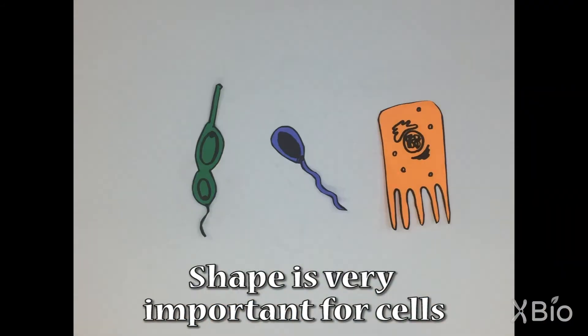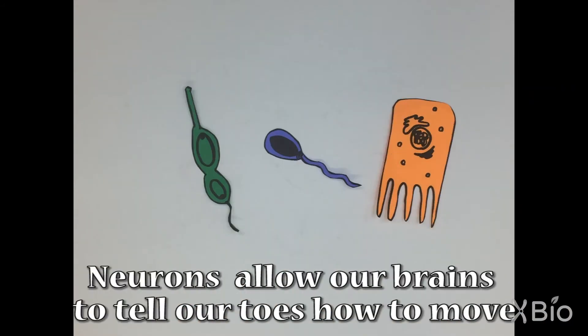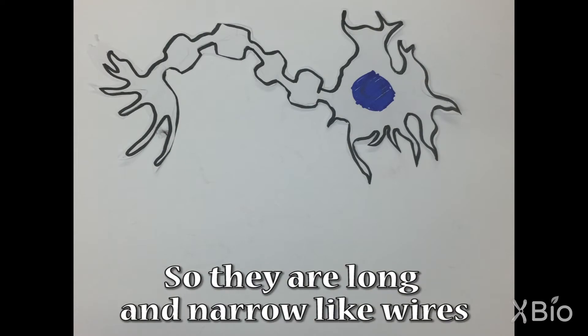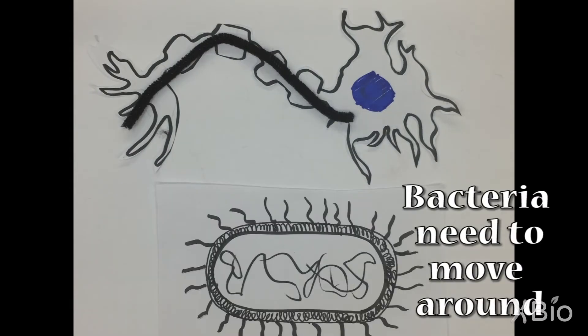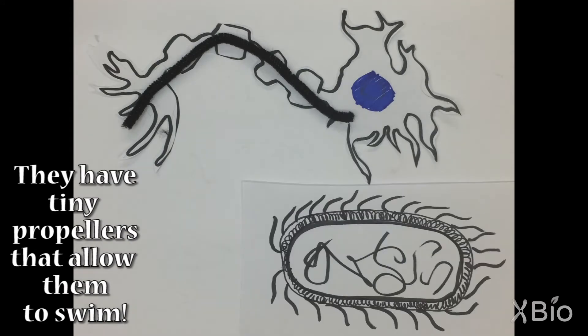Shape is very important for cells. Neurons allow our brains to tell our toes how to move, so they are long and narrow like wires. Bacteria need to move around, so they have tiny propellers that allow them to swim.